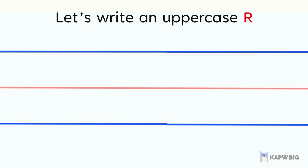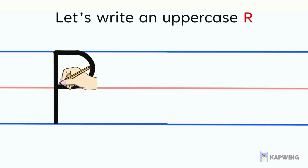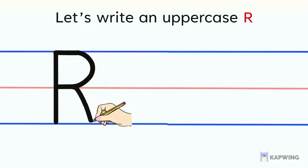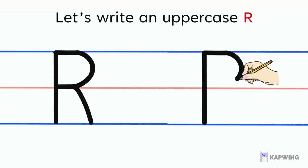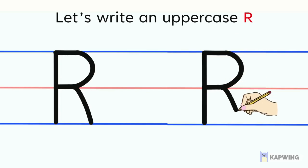When we write the uppercase R, we start at the top line, we go straight down, then we make half a circle, and then a slanted line all the way down to the bottom. Let's try one more time. Start at the top, go all the way down, half a circle, and then a slanted line all the way down to the bottom line. Good job writing the letter R.